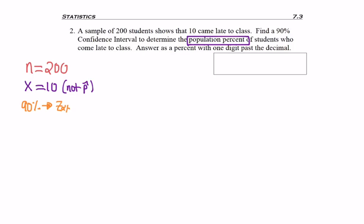And we have a 90% confidence interval, which I've memorized to be 1.645 for the critical value. So we need to find p hat, which is x divided by n. And so 10 divided by 200 is 0.05. q hat is 1 minus p hat. So 1 minus 0.05 is 0.95.